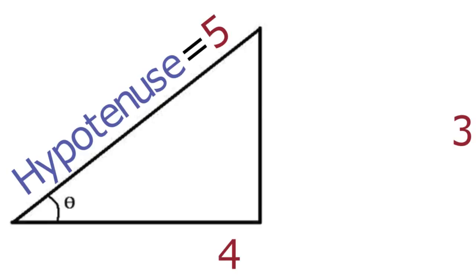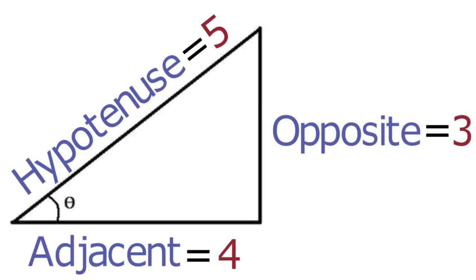The position of theta plays a key role to help you distinguish the two legs of the triangle. The leg of the triangle that makes up the angle theta is called the adjacent side of the triangle. The remaining leg is called the opposite side of the triangle because it's opposite from theta.